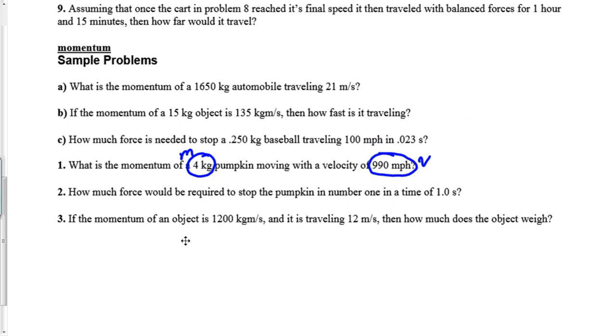There, the pumpkin chunking gun is no more. But some of the pumpkin chunkers have velocities of 990 miles per hour. I'll give you a hint on number two: use the FAT equation. And number three, use your imagination. Good luck.